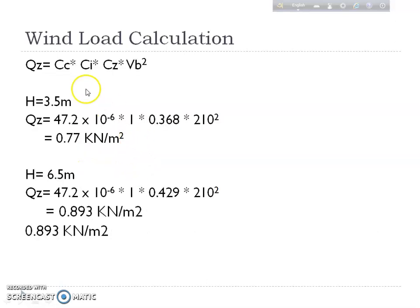Now we can find QZ using the formula: QZ = CC × CI × CZ × VB².